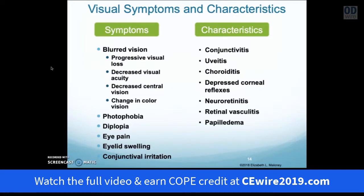Frequent symptoms include blurred vision affecting visual acuity, central vision, and color vision. Patients commonly have photophobia, diplopia, pain about the eye or adnexa, increased eyelid swelling, and conjunctival irritation. Specific characteristics include conjunctivitis, uveitis, chorioretinitis, depressed corneal reflexes, neuroretinitis, vasculitis, and papilledema. In addition, patients present with convergence insufficiency, accommodative insufficiency, and oculomotor dysfunction.